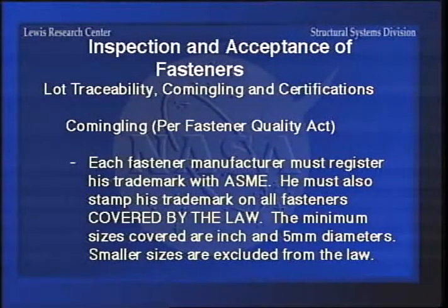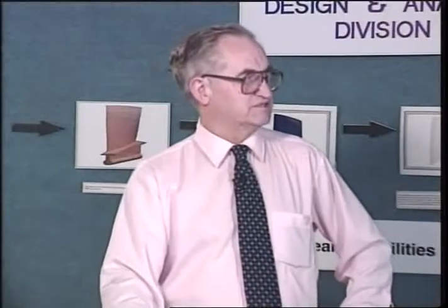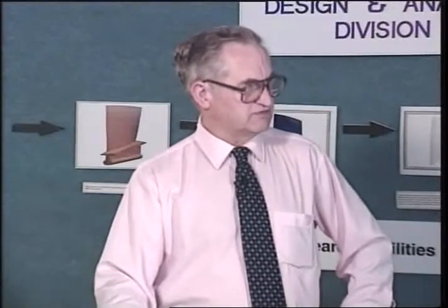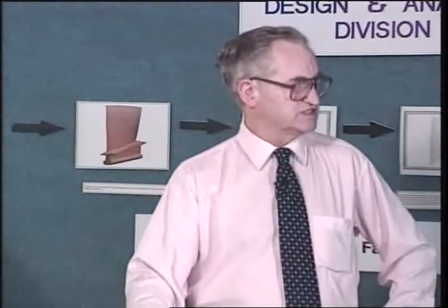Commingling is kind of a new word - in the past, fastener distributors would get fasteners from all different suppliers, put them together in a barrel, and when someone ordered some they'd get a bunch out of the barrel. It would be theoretically possible to get a hundred fasteners made by 25 or 30 different manufacturers. Under this part of the law, the commingling would be cut way down to where you could only have fasteners from two different manufacturers in the same lot, because each manufacturer must register his trademark with ASME and stamp his trademark on all the fasteners covered by the law.